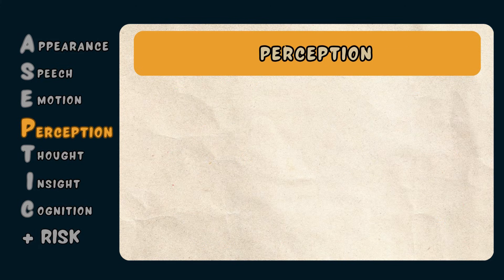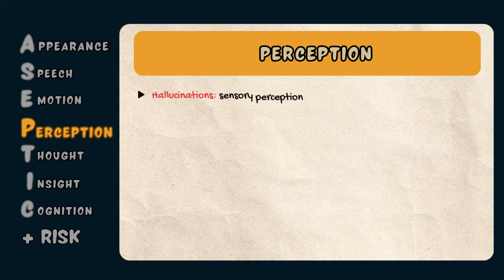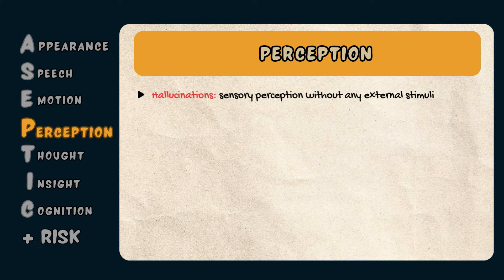The P in ASEPTIC stands for Perception, which refers to assessing the sensory information of the world around us. There can be different types of perceptual abnormalities. A hallucination is when someone sees, hears, feels, smells, or tastes something that isn't really there — it feels completely real to the person even though there is no external source. For example, a patient with auditory hallucinations may hear voices when no sound is present. Hallucinations can occur in schizophrenia, psychosis, or drug use.